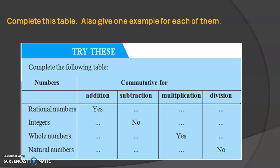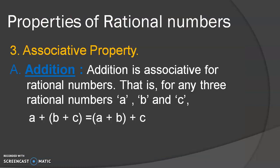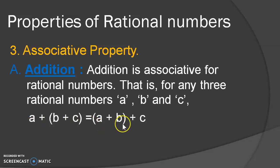I hope you are enjoying the video and getting what I am trying to make you understand. So the next is associative property. What do you mean by associativity? Associativity is the one which is related to the grouping of numbers. Consider any three numbers A, B and C. If A is added to the sum of B and C, then its result will be equal to the sum of A and B, plus C. Take some rational numbers and try to justify this on your own. Hence, we can say that addition is associative for rational numbers.